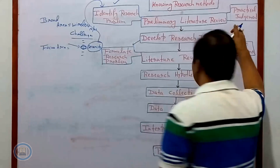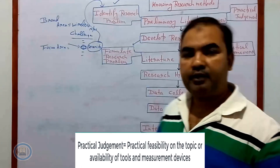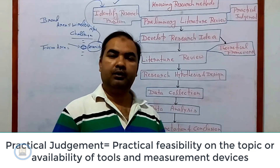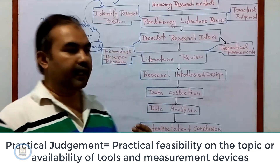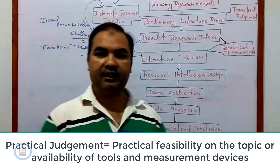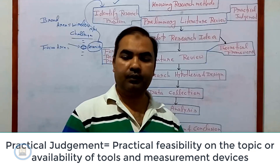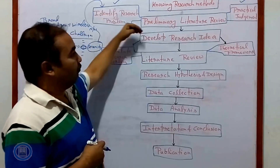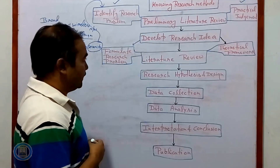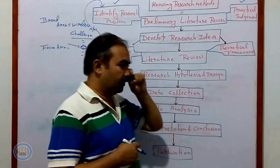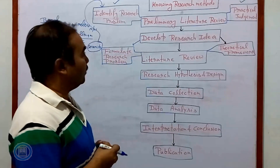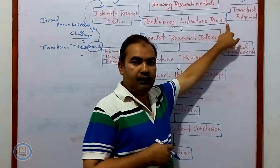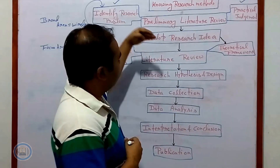Practical judgment is very important. When conducting the research, you should know whether it is possible for you to complete the research on that topic and whether the tools and their feasibility are available — whether it is a hardware tool, a software tool, or a simulation tool. From the preliminary literature review, we identified our focused area and confirmed that the tools needed to conduct the experiment are available.